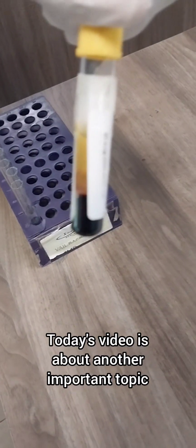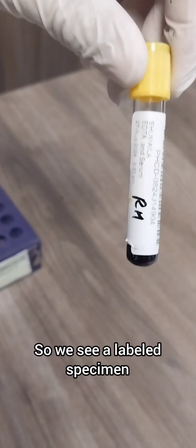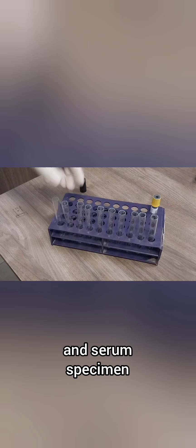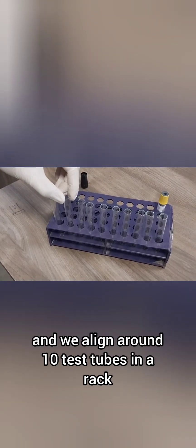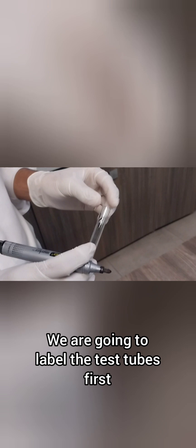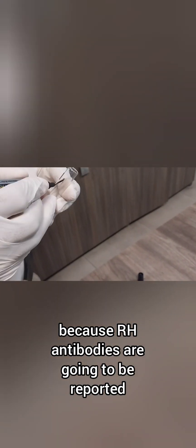Today's video is about another important topic, which is RH antibodies and how to calculate RH. We see a labeled specimen and serum specimen. We align around 10 test tubes in a rack and are going to label the test tubes first because RH antibodies are going to be reported and performed in a titer.